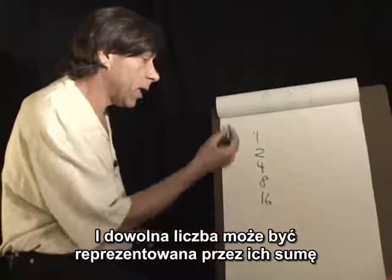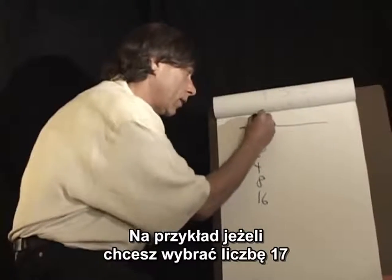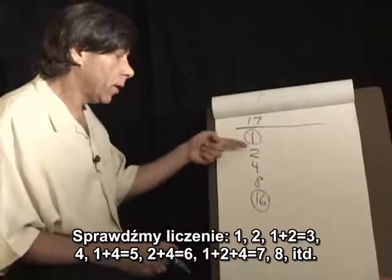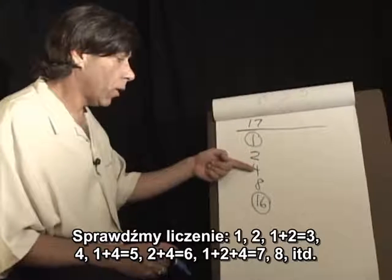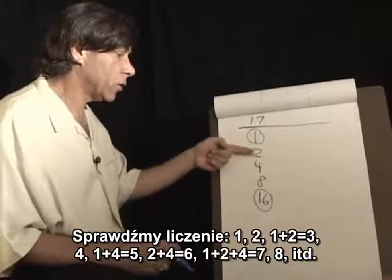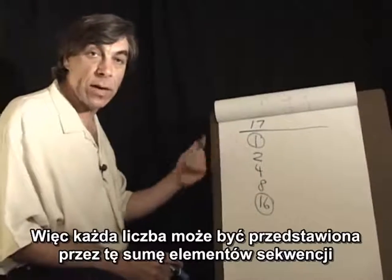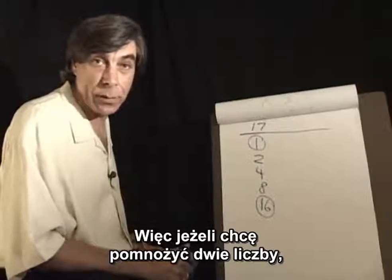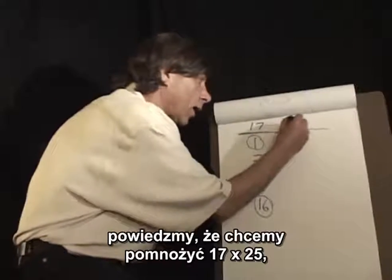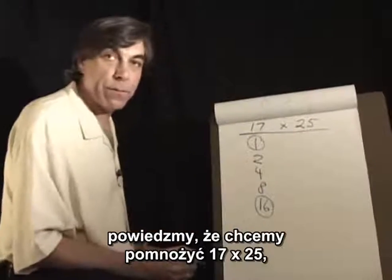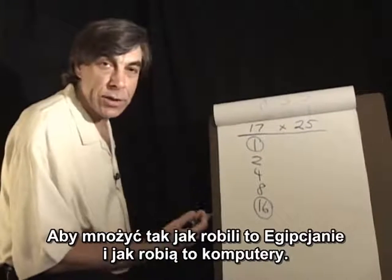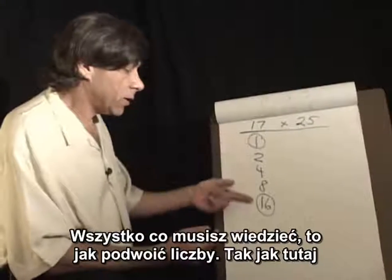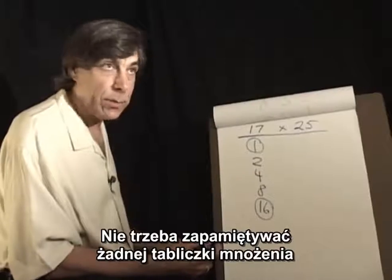Any number can be represented by the sum of these. For example, if we wanted to choose the number 17, that's 16 plus one. You can count: one, two, one plus two make three, four, one plus four make five, two plus four make six, one plus two plus four make seven, eight, and so forth. So any number can be represented as the sum of elements of this sequence. So if I wanted to multiply two numbers — let's say 17 by 25 — all you have to know is how to double numbers and how to add two numbers together. No multiplication table needed to be memorized.